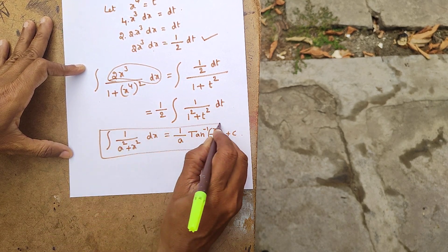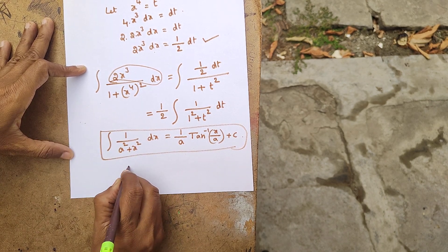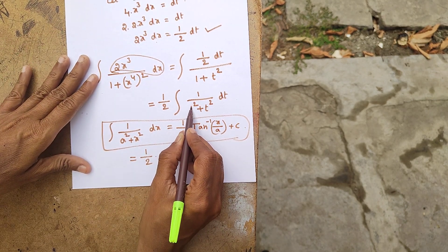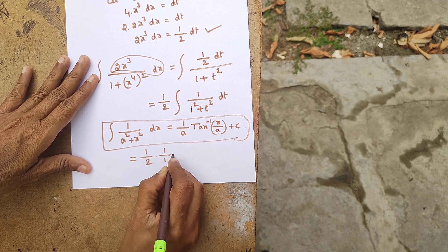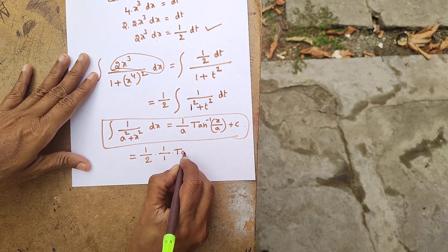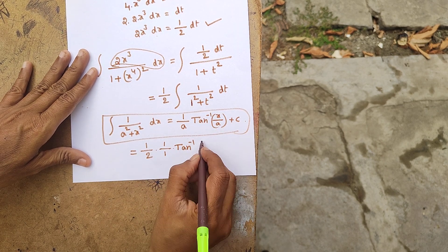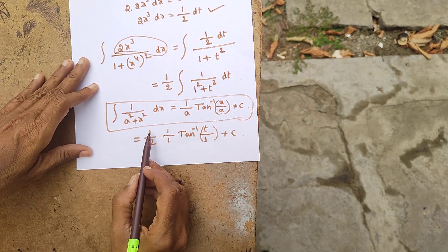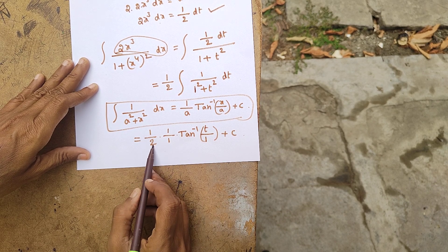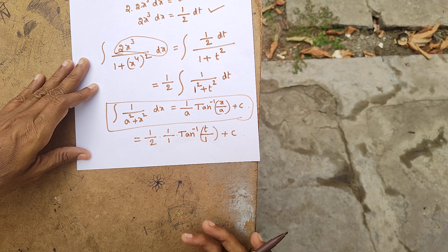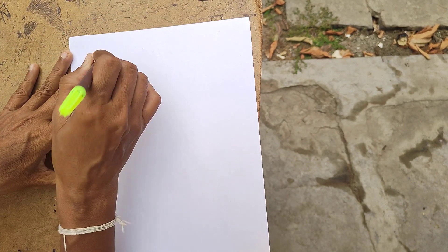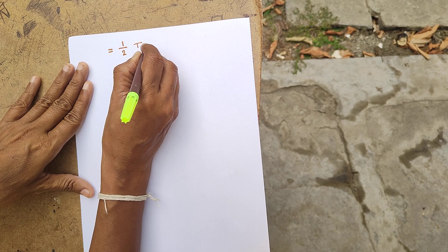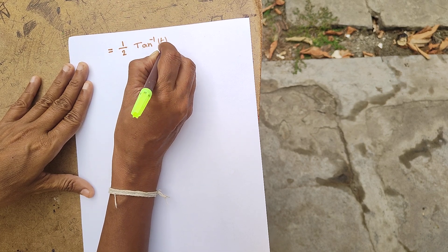Applying the formula, with a equal to 1, we get one-half times tan inverse of t plus c. So the answer in terms of t is one-half tan inverse t plus c.